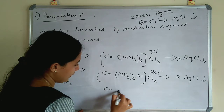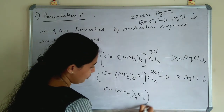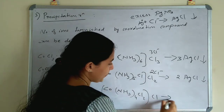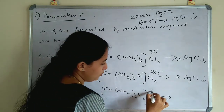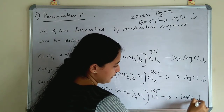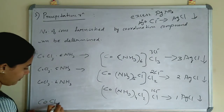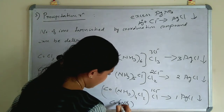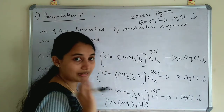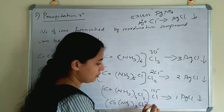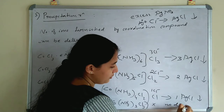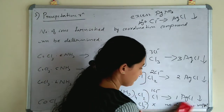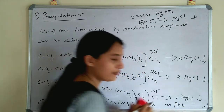In the third compound Co(NH₃)₄Cl₂·Cl, the 2 Cl inside the coordination sphere satisfy the secondary valency and 1 Cl is ionisable. So 1 Cl⁻ means 1 AgCl is precipitated. In the last compound, Co(NH₃)₃Cl₃, all Cl is in the coordination sphere satisfying secondary valency — no Cl⁻ is present, so no dissociation takes place and no precipitate is formed.